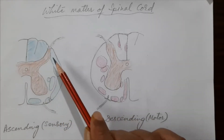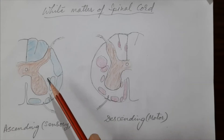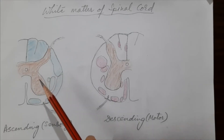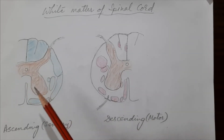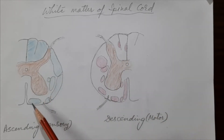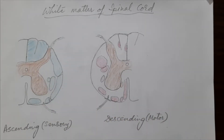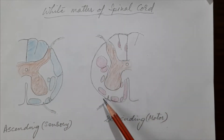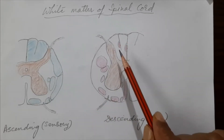Funiculus means white columns, so the white matter is organized into broad areas known as funiculi or white columns. There are three different types: the anterior white column, the lateral white column, and the posterior white column. This applies to both the ascending (sensory) and descending (motor) diagrams. These are the anterior funiculus, the lateral funiculus, and the posterior funiculus.